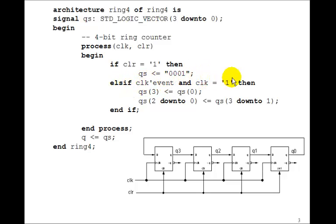Else on the rising edge of the clock, remember clock event and clock equals 1 is the rising edge of the clock. Q3 now gets Q0, and then QS 2 down to 0 gets QS 3 down to 1. And then we set Q to QS.